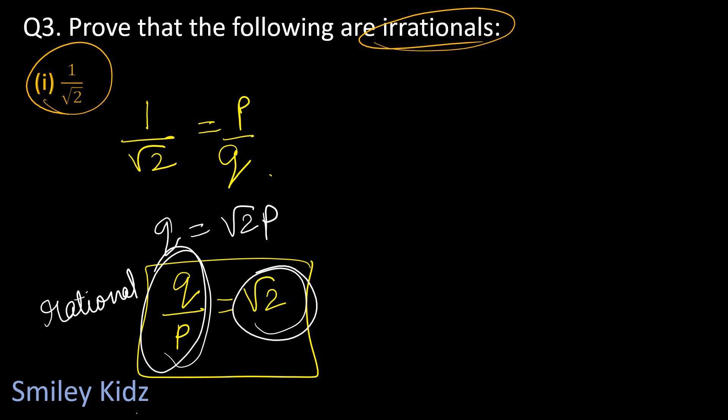Here q upon p, where q and p are integers, is a rational number. But on the RHS, root 2 is an irrational number. This is a contradiction to the assumption that 1 by root 2 is rational. So we conclude that 1 by root 2 is irrational.